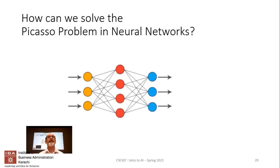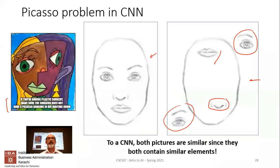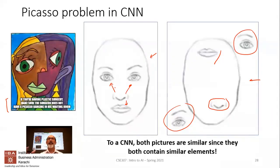A student suggested having some kind of measure to calculate the distance between features. So if the nose is at position x, then in a normal face the eye might be at 2x or 3x. You'd want some kind of measure between those features.